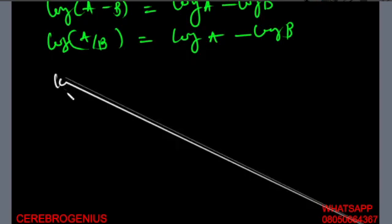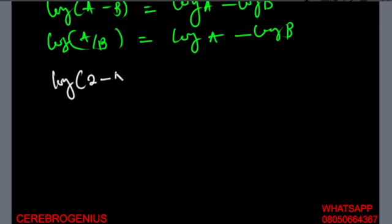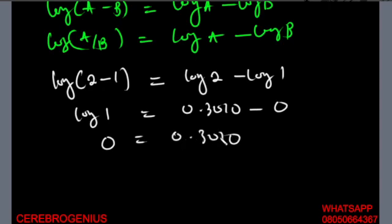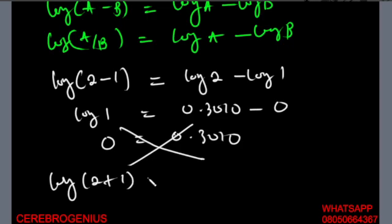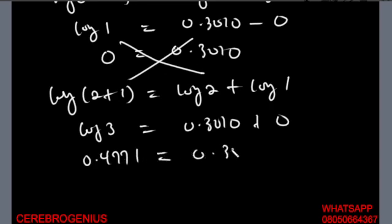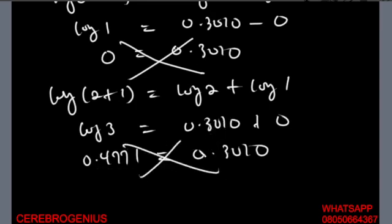Let's prove it with numbers. If you have log(2 minus 1), you might claim it equals log 2 minus log 1. Let's check: log(2 − 1) = log 1 = 0. But log 2 minus log 1 = 0.3010 minus 0 = 0.3010. Is 0 equal to 0.3010? No. Similarly, log(2 + 1) = log 3 = 0.4771, but log 2 plus log 1 = 0.3010 plus 0 = 0.3010. These are not equal, so you are wrong.